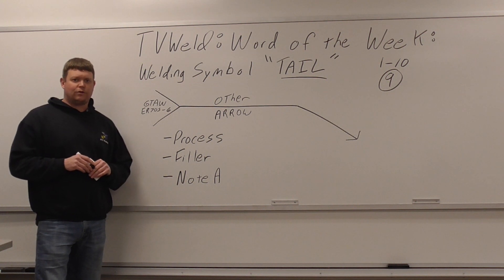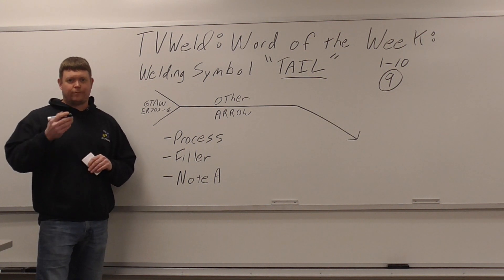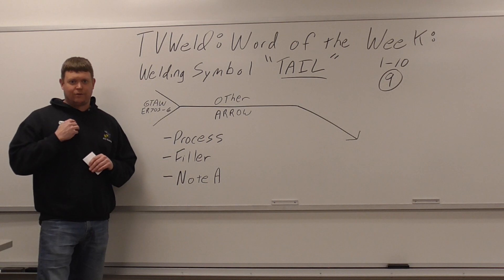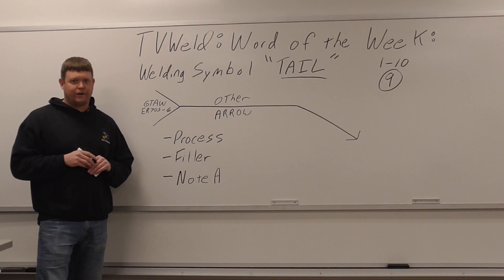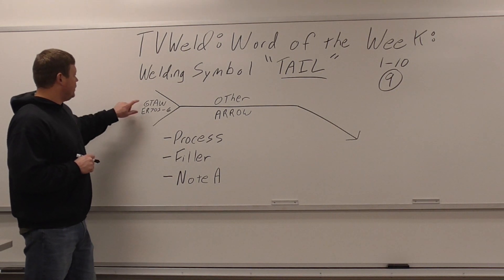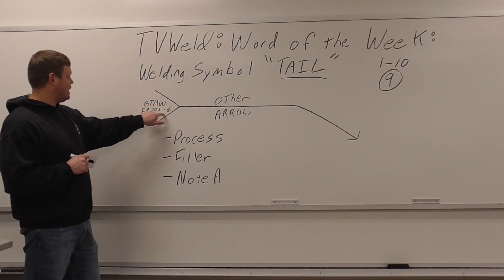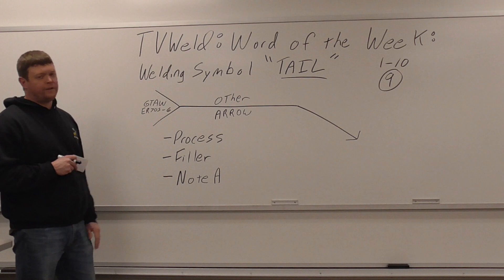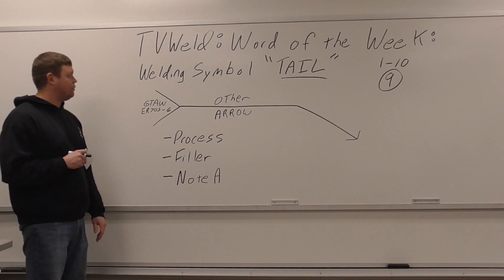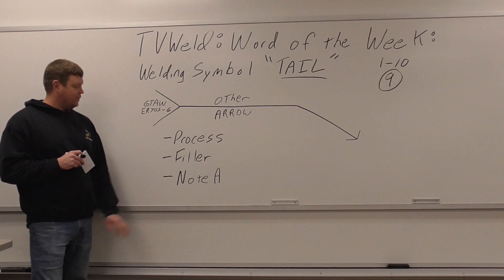If you agree with it, throw it in the comments — if you disagree, you can throw that in the comments as well. You can see I wrote on here gas tungsten arc welding, because that's the process. ER-70S-6, that would be a filler metal associated with TIG welding. And then I have Note A down here.